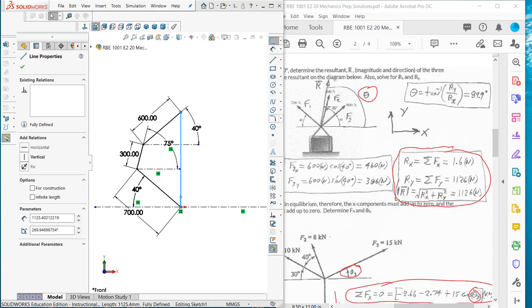Then you have the 600 at 40 degrees. They're in equilibrium, so the resultant is just going to be equal to adding these graphically tip to tail. And then we get this line.